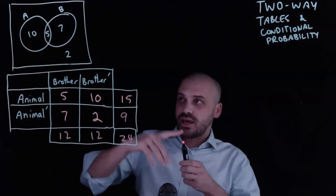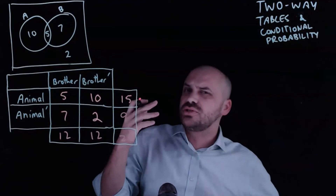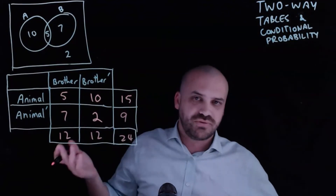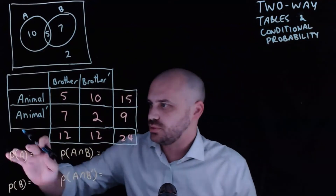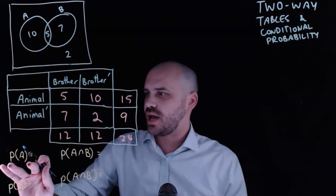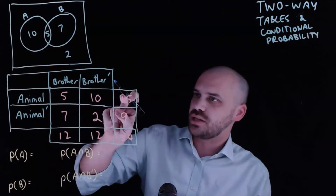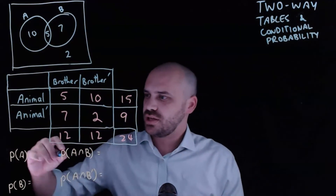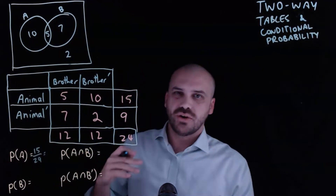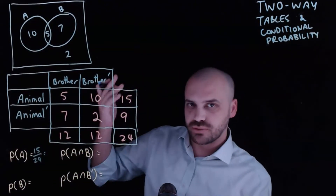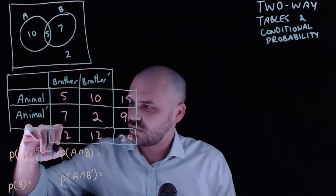You can see that two-way tables and Venn diagrams are related — they're just two different ways of showing the same information. That means we can calculate probabilities from our two-way table. The probability that someone has an animal in their house: the total number of people with animals is 15, so it's 15 out of 24. We can simplify that by dividing both top and bottom by three to get five over eight.